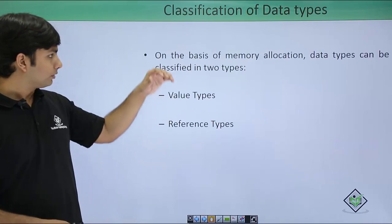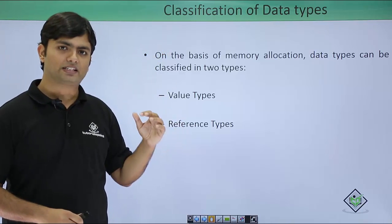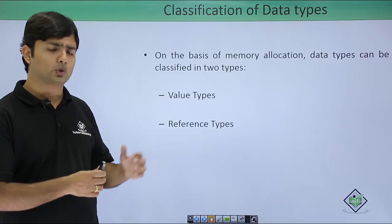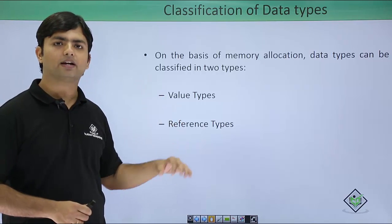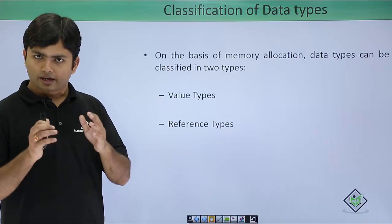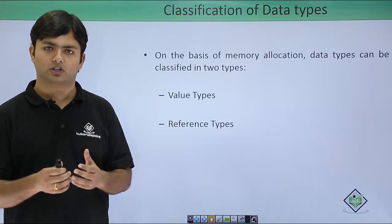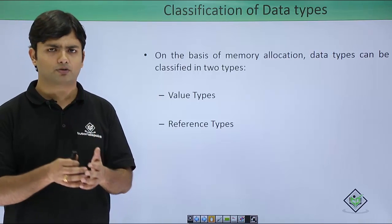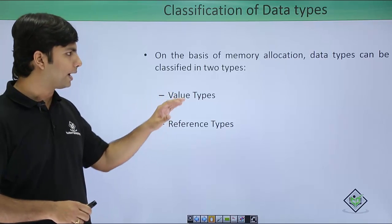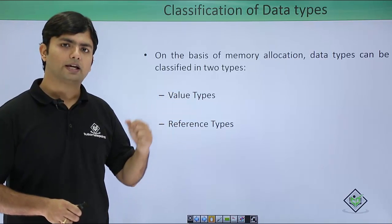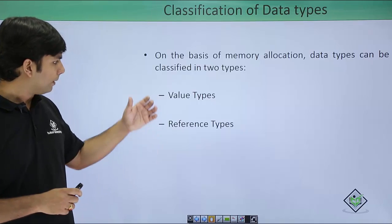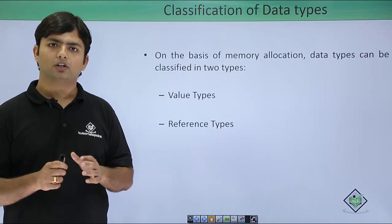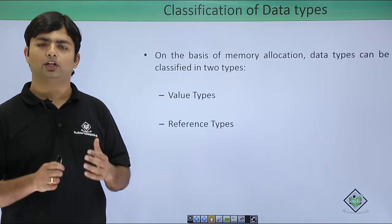You can classify data types on the basis of memory allocation into two parts: value types and reference types. A value type is something which allocates the value in the stack, whereas a reference type stores the value in the heap but stores the reference in the stack.